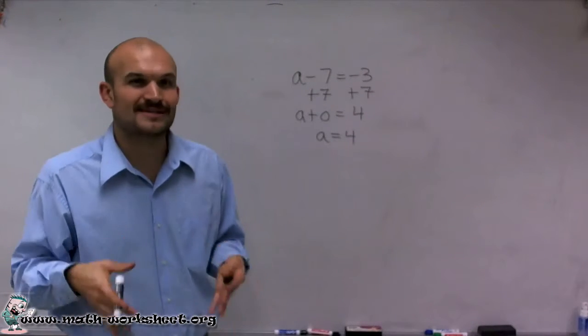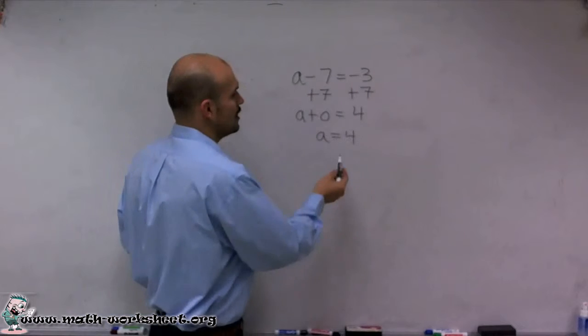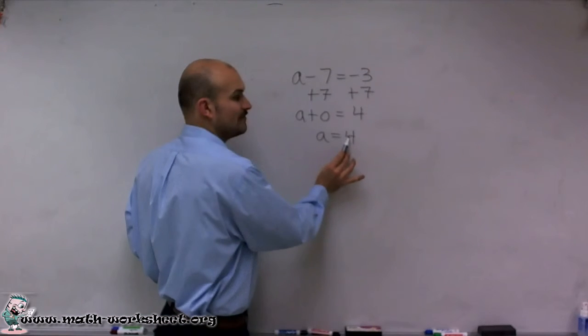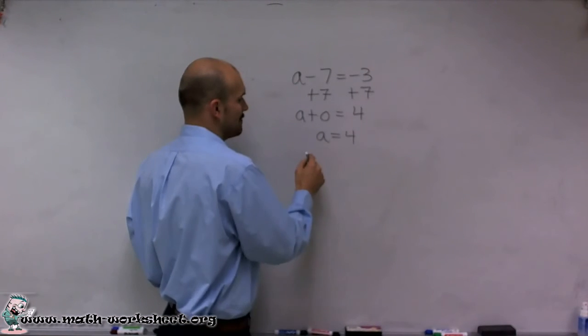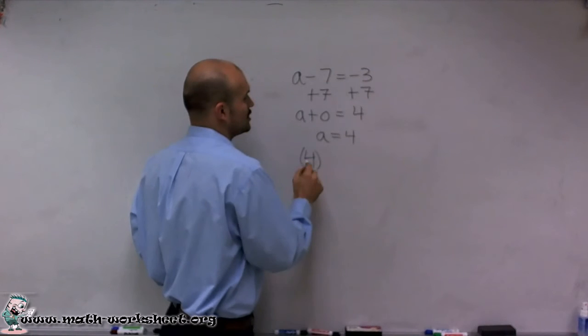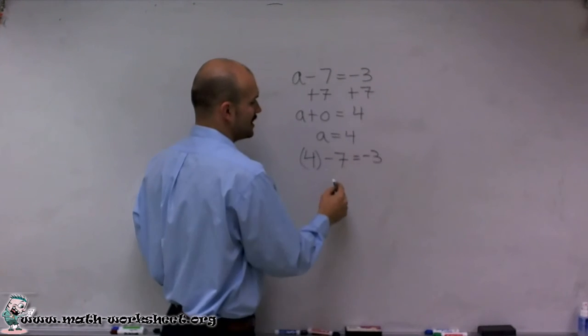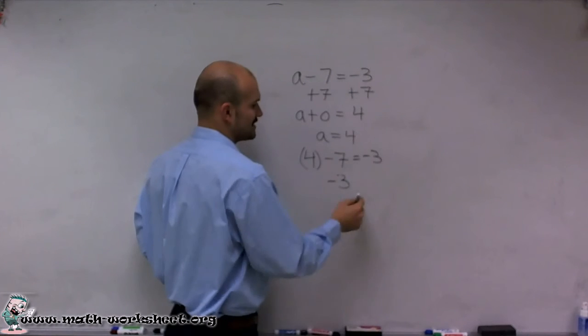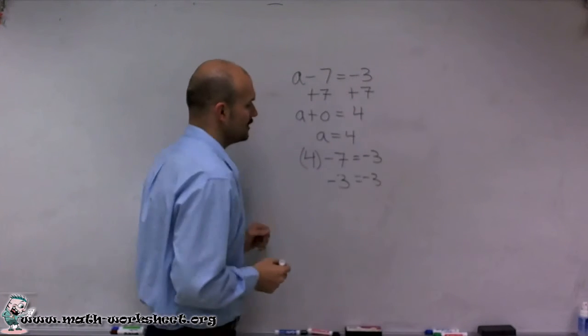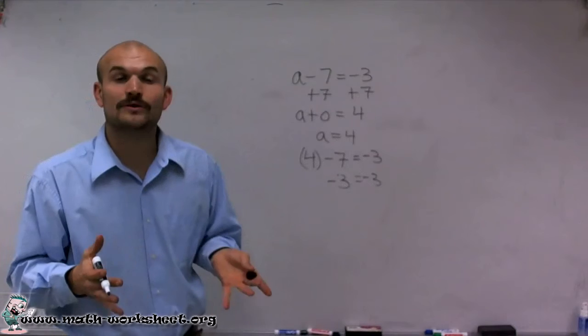So to double check my answer to make sure what I did is correct, what you can always do is plug in the value of a that you solved for and plug it back into the original equation. So 4 minus 7 equals negative 3. By checking our answer, by simplifying this left side, we do indeed see that my answer for a equals 4 is correct.